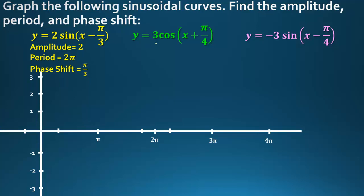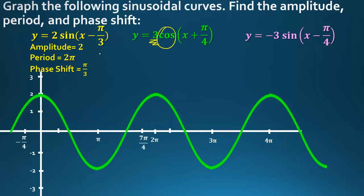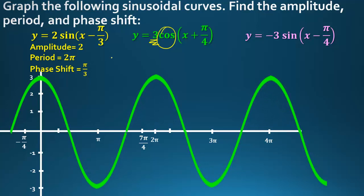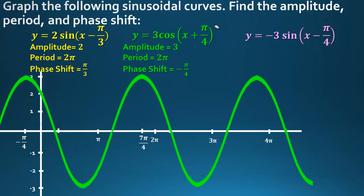For the next function: the 3 in front stretches it to between 3 and –3. The plus value shifts it left, so our phase shift is negative, and the period runs from –π/4 to 7π/4 — still 2π. Amplitude is 3, period is 2π, phase shift is –π/4.